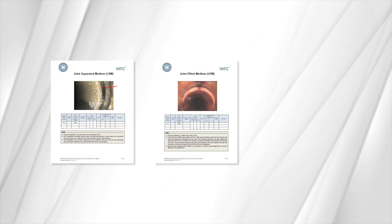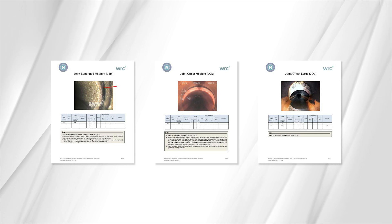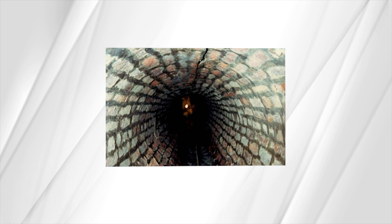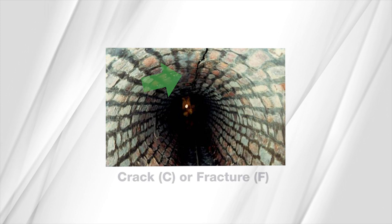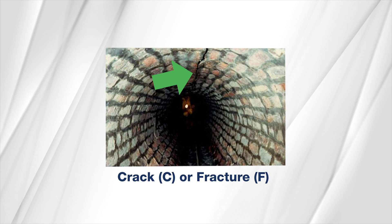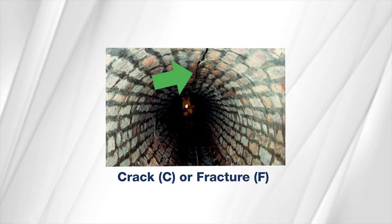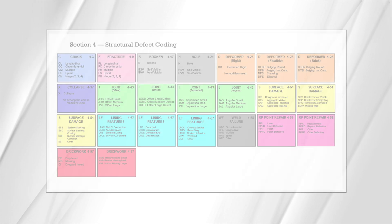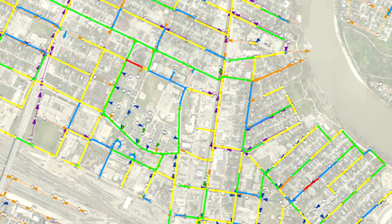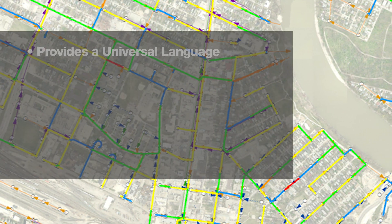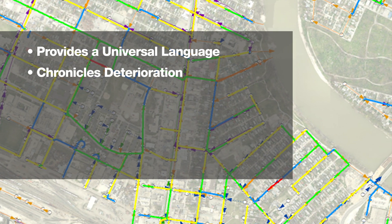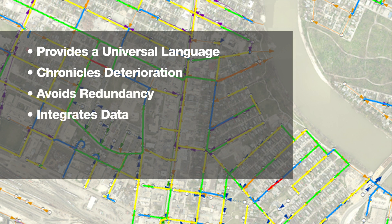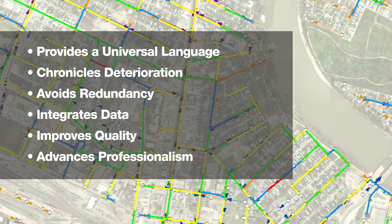Let's discuss why standardization is important and how using a well-established condition coding system like PACP provides value. To illustrate, let's take a moment and choose which code you might use for this image. Would you identify this as a crack using the letter C, or a fracture using the letter F? We will provide the correct answer later. PACP provides a standard set of codes and a standardized method to apply those codes to condition assessment of the infrastructure. It adds value because it allows benchmarking, provides a universal language for assessment, provides ability to chronicle deterioration, avoids redundant effort, integrates data from various software products, improves quality and consistency of observations, and it advances professionalism.